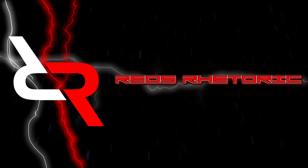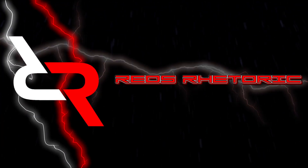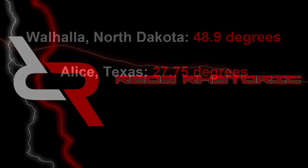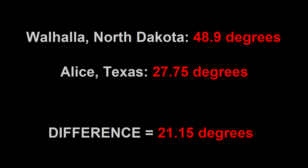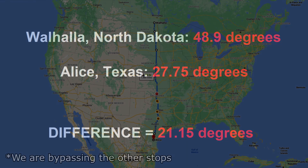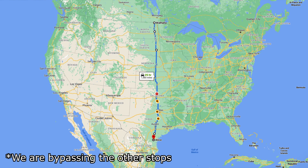With this data we can go even further and also confirm the size of the earth. Let's use our data to find a value for the radius. At the start of our trip in Walhalla, North Dakota, we recorded an altitude angle of 48.9 degrees. At the end in Alice, Texas, we recorded 27.75 degrees, giving us a difference of 21.15 degrees.